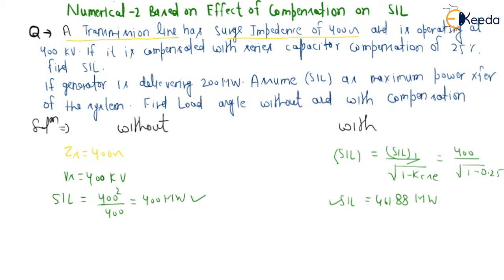Now for the power transfer of 200 megawatt: P equals Pmax sine delta. So 200 megawatt equals 400 megawatt sine delta. From this, delta will be equal to 30 degrees without compensation.